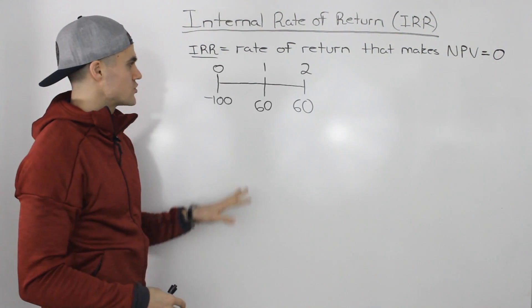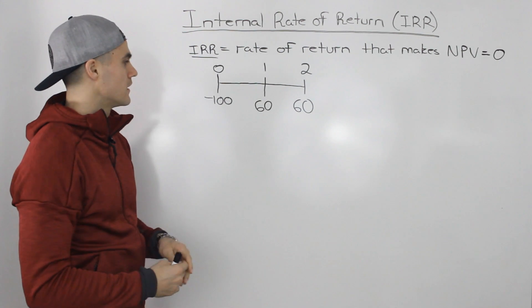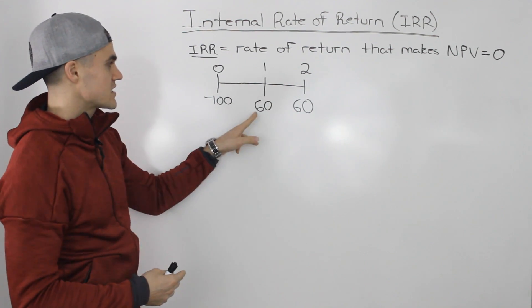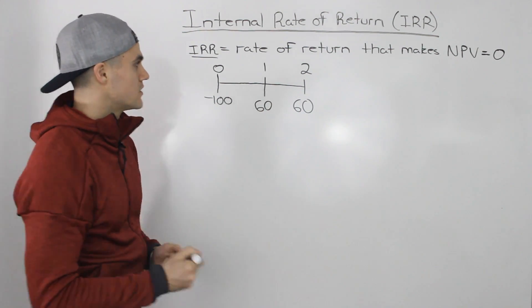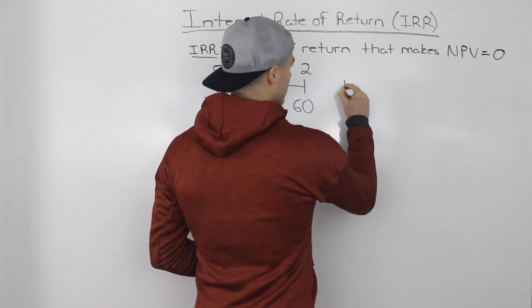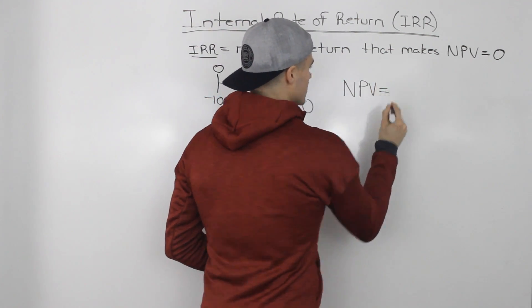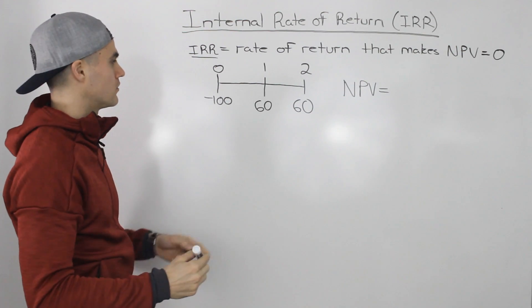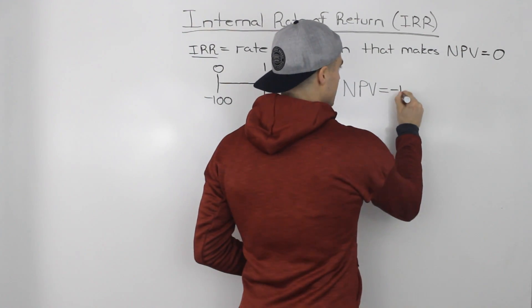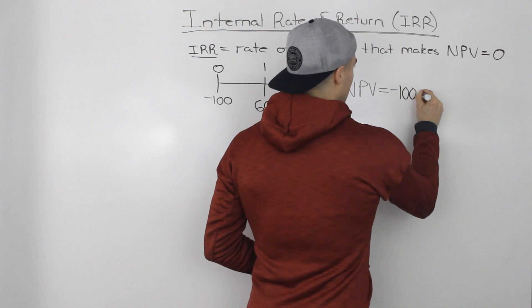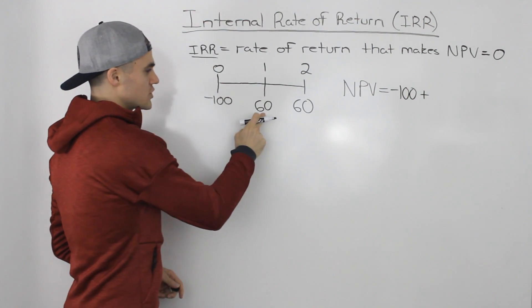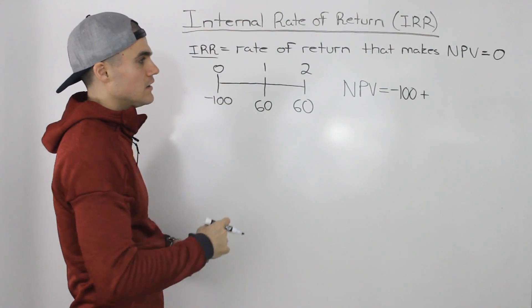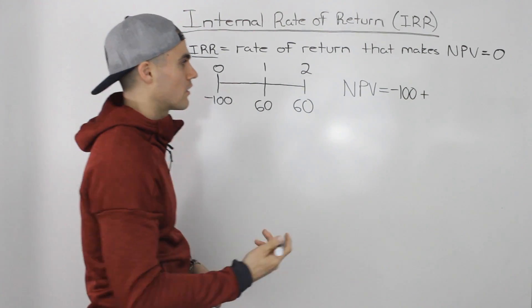So let's say that we have this project with the cash flows drawn in this timeline. So the project is costing us $100 today and it's going to generate cash flows of $60 in year one and year two. So if we were to find the net present value of this project what do we do? We have to take all the cash flows, discount them to time zero, and then net all of them out. So the negative $100 is already in time zero. Now this $60 in the first year we have to discount by one year to time zero. Now we don't know what the discount rate is. We're not given it. So let's just keep the discount rate as an R for now.